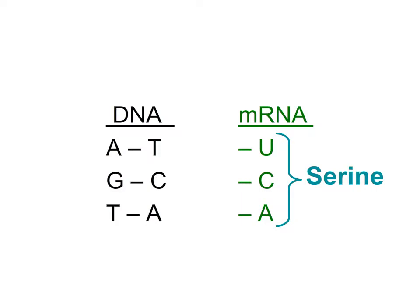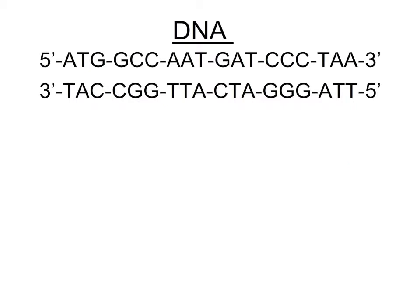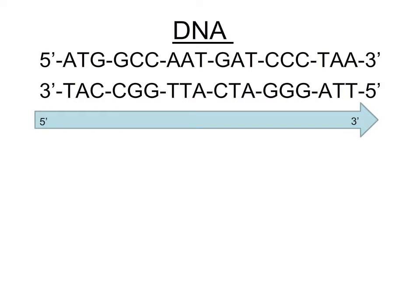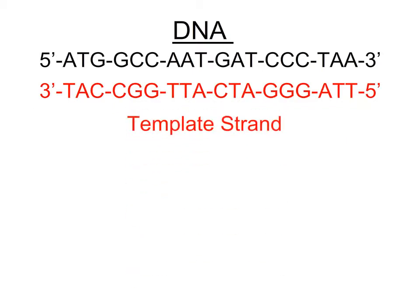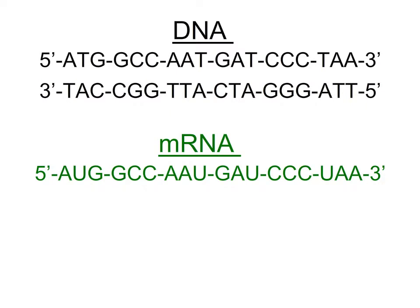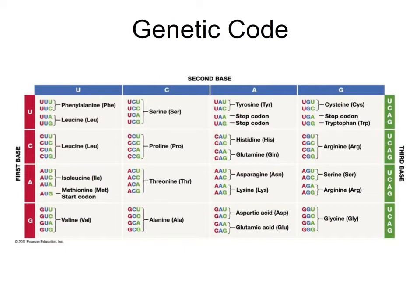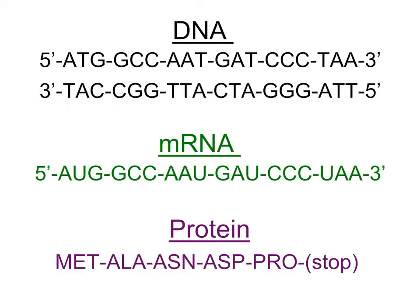Now let's try this on a bigger scale with a hypothetical gene. You should be able to determine which strand is the template strand, because RNA polymerase must add nucleotides in a 5' to 3' direction — so we identify the strand that can build an RNA strand beginning with AUG. Now synthesize the messenger RNA. There are six codons in this sequence. Using the genetic code table, the amino acids produced are: methionine, alanine, asparagine, aspartic acid, and proline. Notice that even though you have six codons, one serves as a stop codon, so the actual protein is only composed of five amino acids.